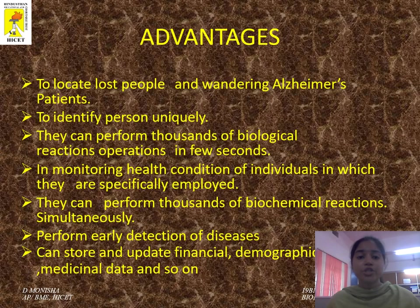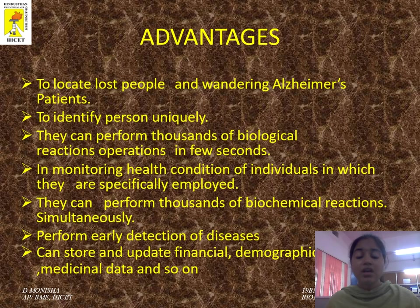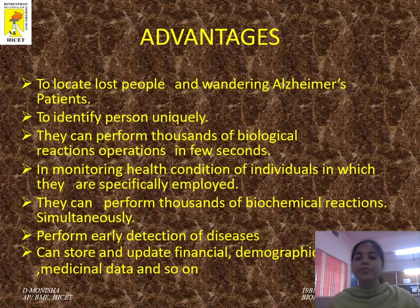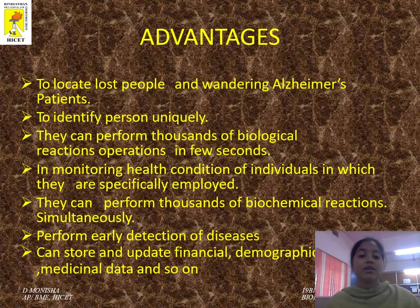Advantages of biochip: It can locate lost persons and wandering Alzheimer's patients. It can identify a person uniquely. They can perform thousands of biological reaction operations in a few seconds. They help in monitoring the health condition of individuals. They can perform thousands of biochemical reactions simultaneously, perform earlier detection of diseases, and store and update financial, demographic, and medicinal data.